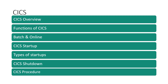At the end of this video you will be able to understand the overview of Kicks: what is Kicks, how we use the functions of Kicks, and we will discuss about OLTP and batch jobs — the difference between batch process and online transaction process. Also we will understand what the Kicks startups are and the types of startups, as well as the startup and shutdown procedure of Kicks.